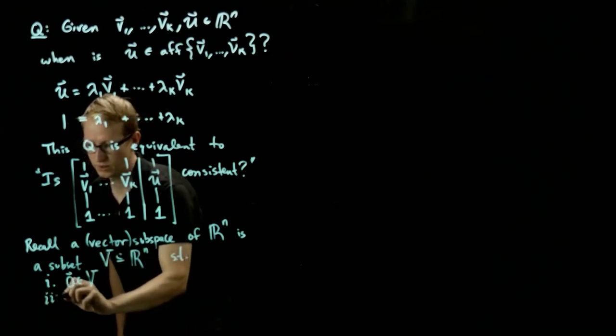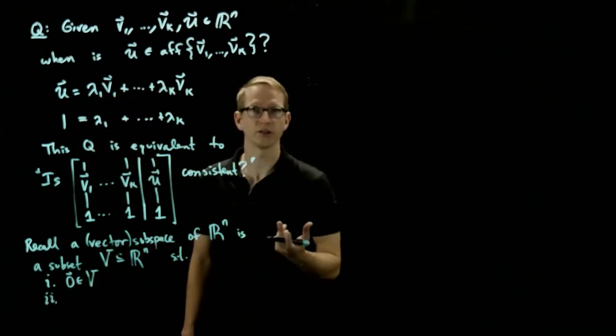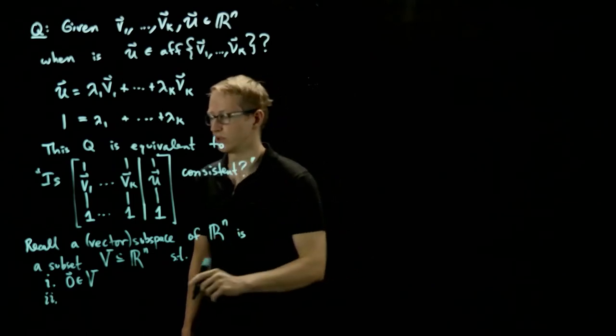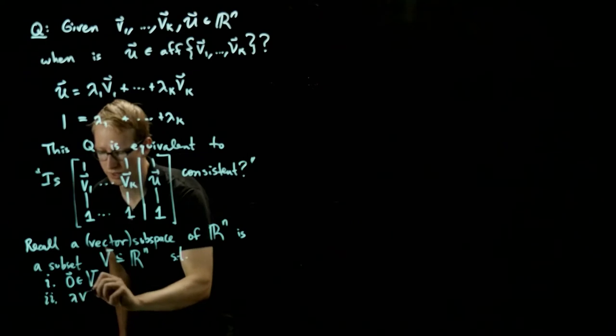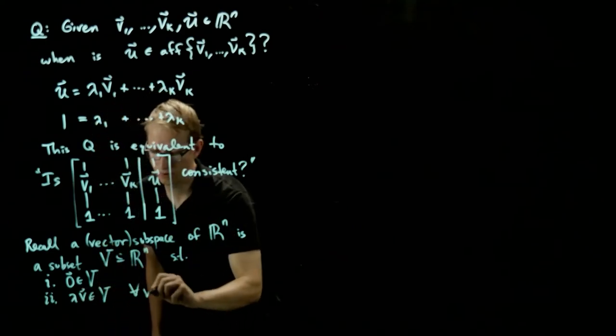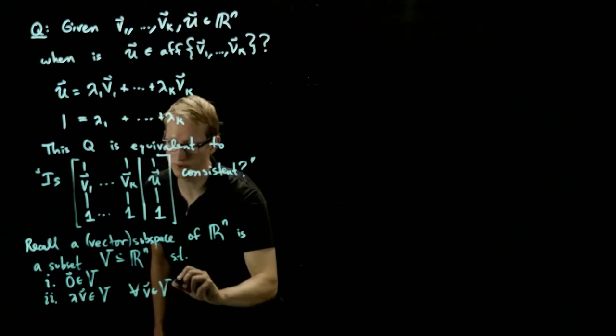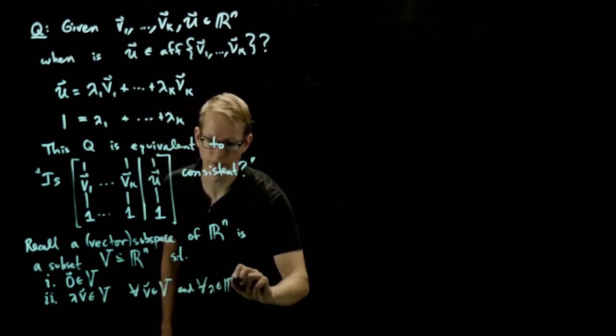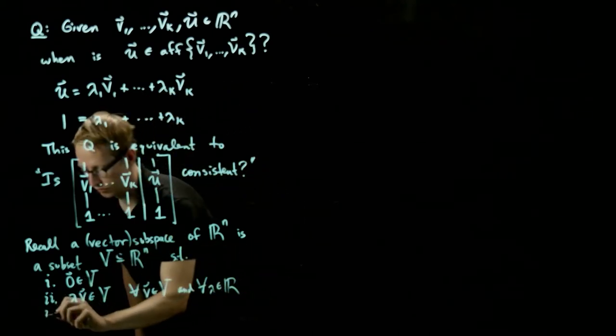The second condition is that if you take a vector in V, and you scale it by any number, then that scalar multiple is also in V. So lambda v is in V, provided that the vector v was in V to begin with, and lambda is a real number.